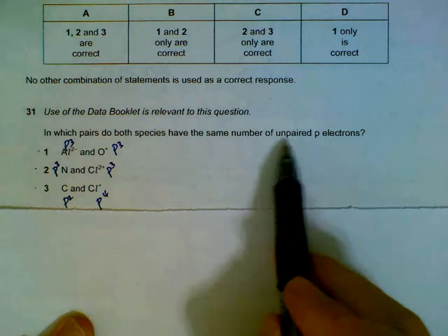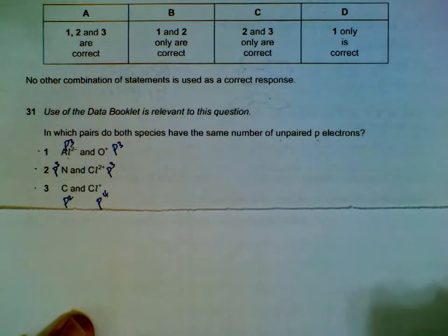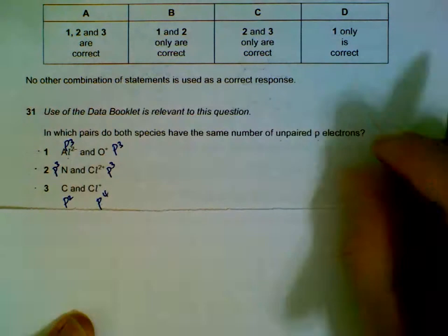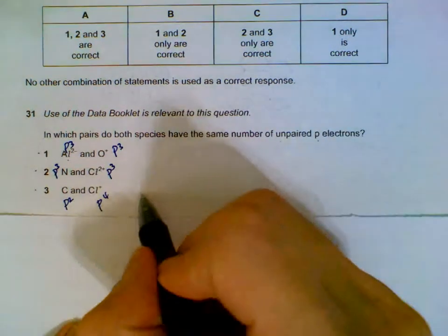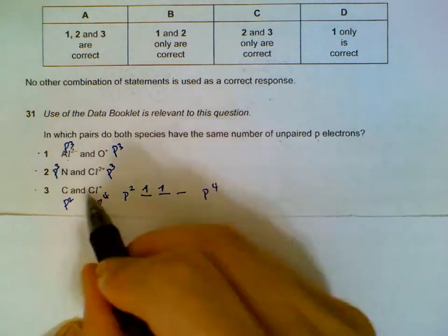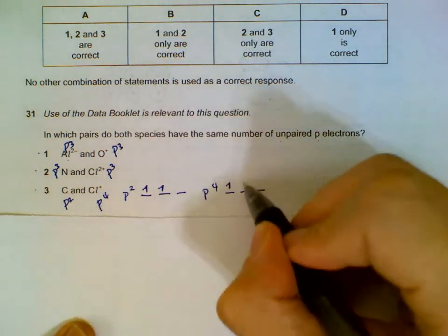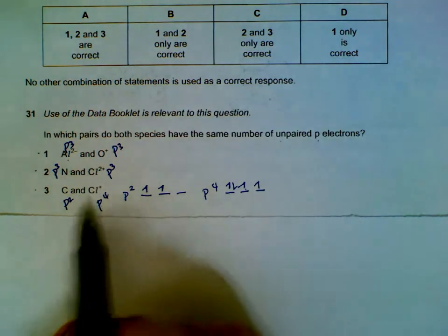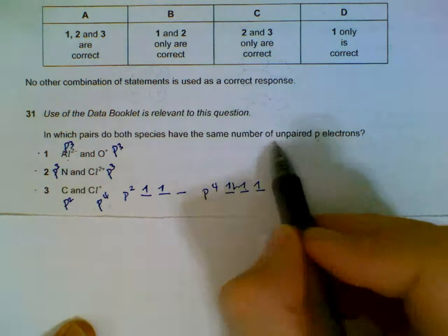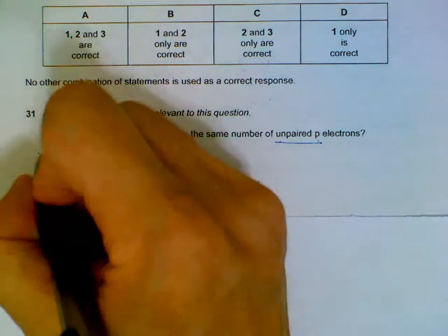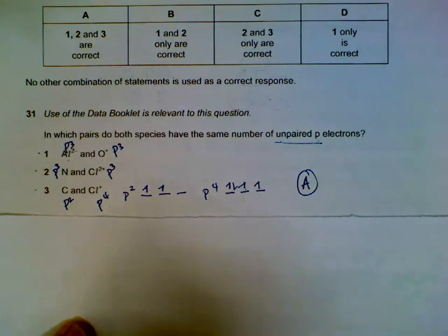We have to check number of unpaired electrons, so it's not just number of p electrons, it's unpaired p electrons. One and two for sure will be the same. Looking at statement three: carbon for p² will look like this—two unpaired electrons. For p⁴ Cl⁺: one, two, three, four—it will also have two unpaired electrons. So although they don't have the same number of p electrons, they have the same number of unpaired p electrons. So be careful whether it's asking for p electrons or unpaired p electrons. All three are correct, so answer is A.